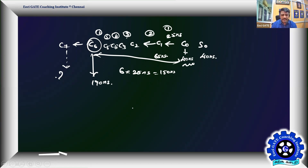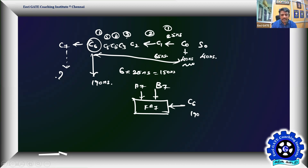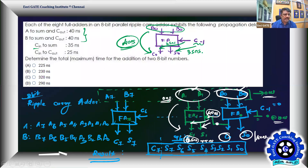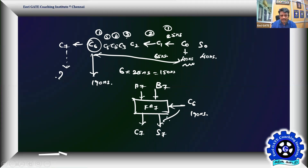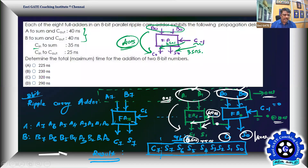Now for the final full adder FA7: inputs are A7, B7, and C6 (ready at 190 ns). C7 is generated via C-in to C-out = 25 ns, so C7 is ready at 190 + 25 = 215 nanoseconds. S7 is generated via C-in to sum = 35 ns, so S7 is ready at 190 + 35 = 225 nanoseconds — the worst-case propagation delay.